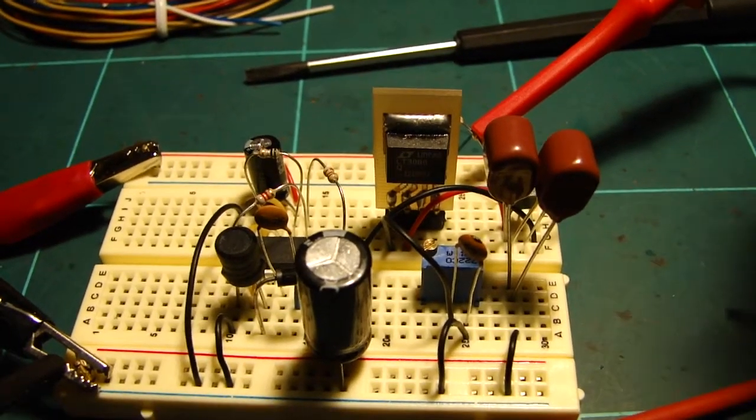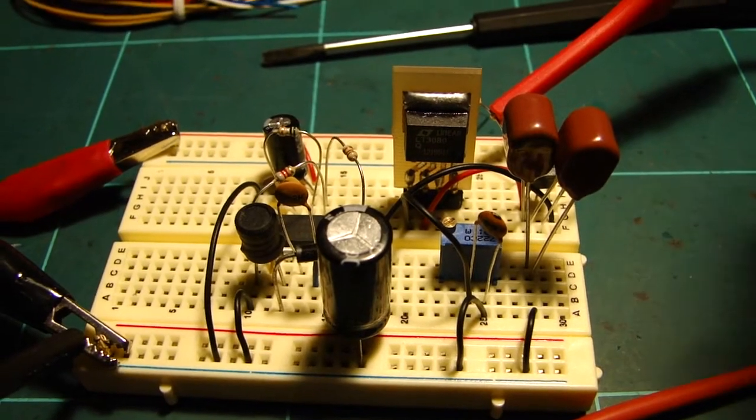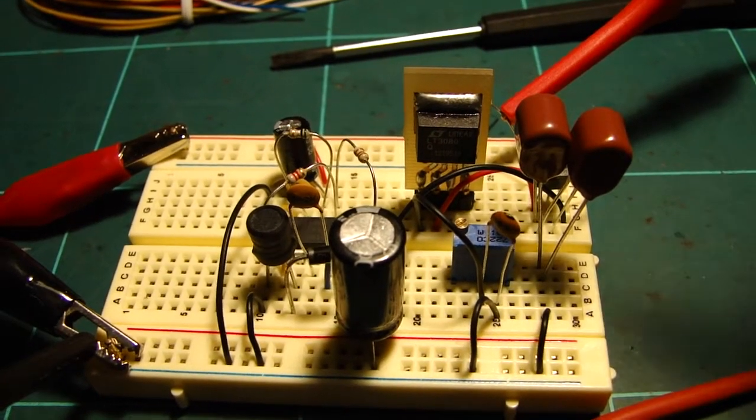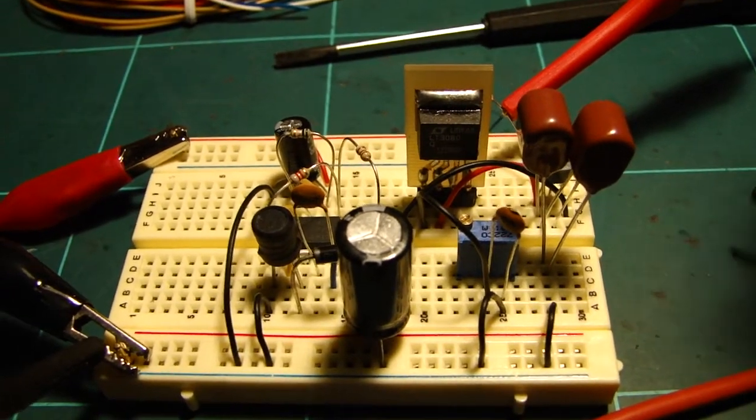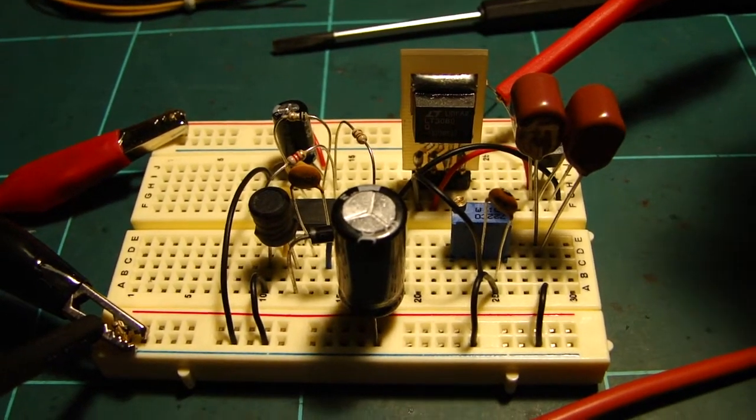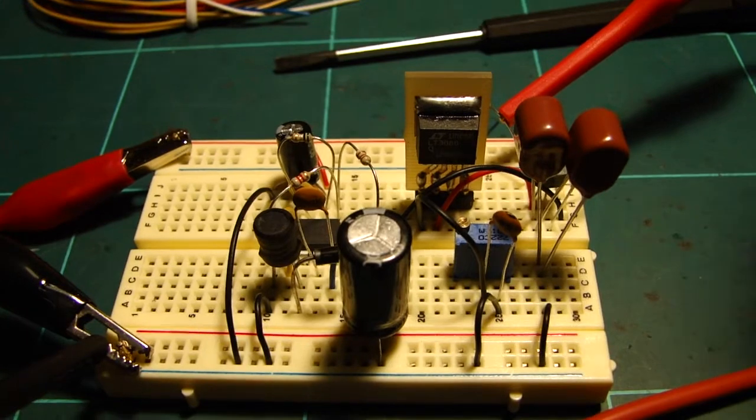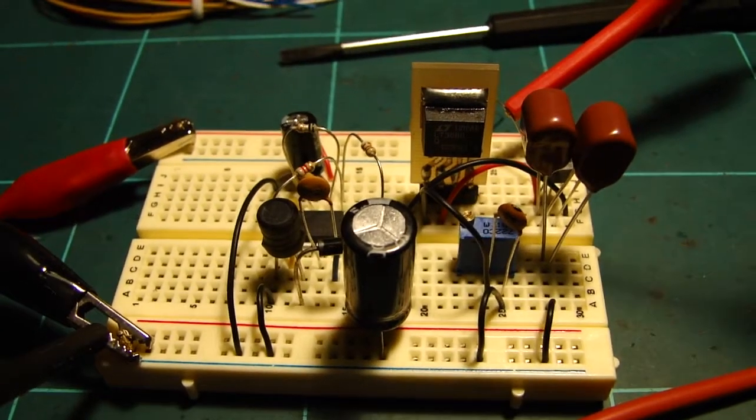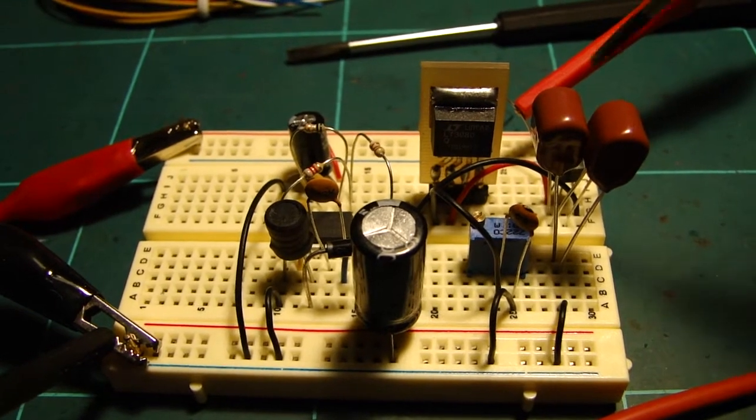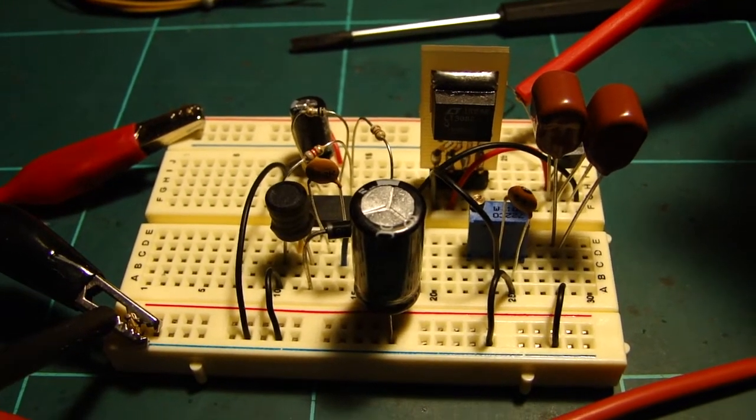Because in the data sheet of the LT3080 it says to get true 0V performance, a 1mA current needs to be on the output pin all the way down. And the way they suggest you do that is to have a negative supply. So basically I've got a negative supply, the constant current which allows the LT3080 to go all the way down to 0V.